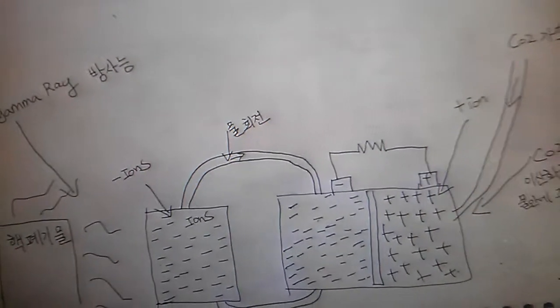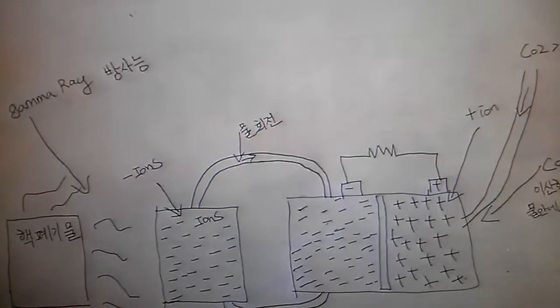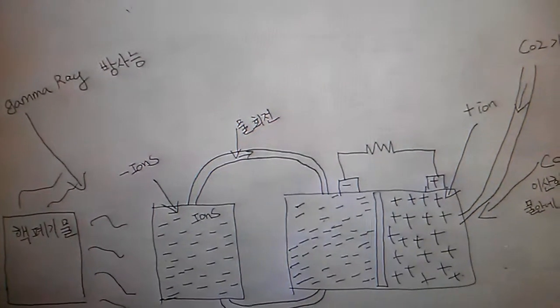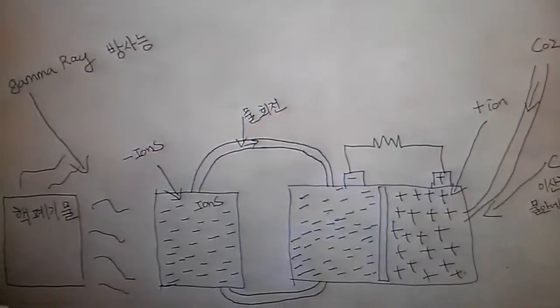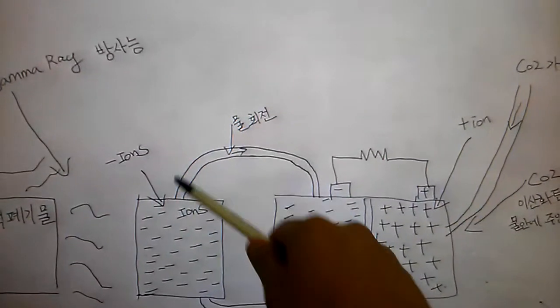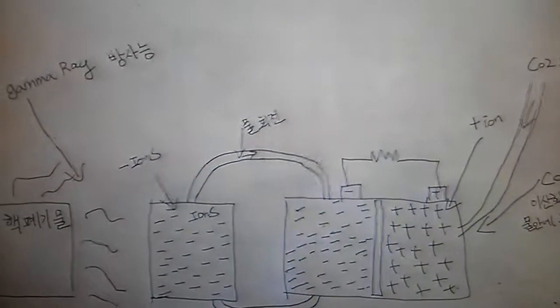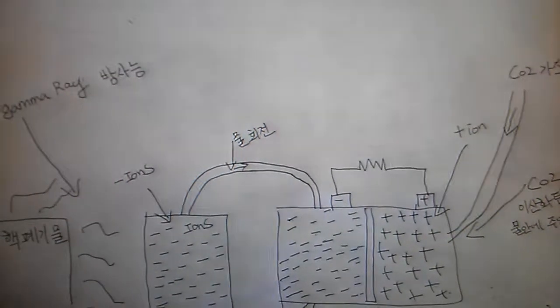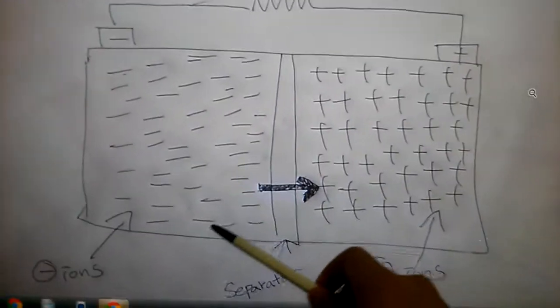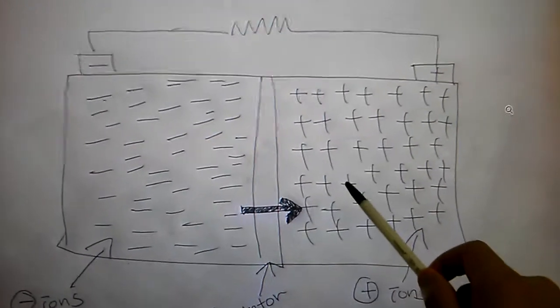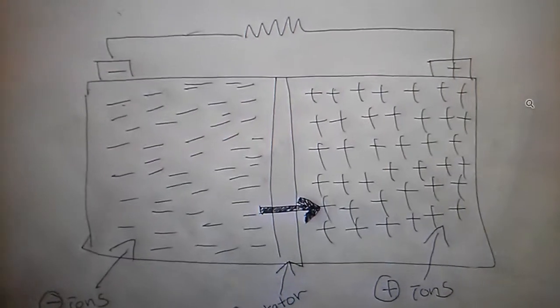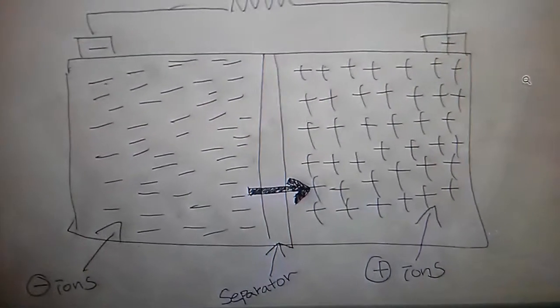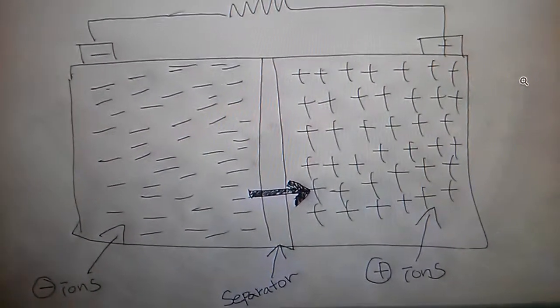If you look up on the internet, gamma rays when they hit air or water can change the structure of the water, converting it into negative ions. Why is this important? Well, the negative ions can be used in a battery.